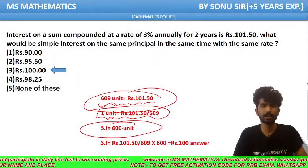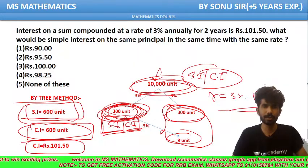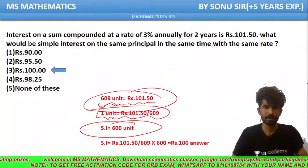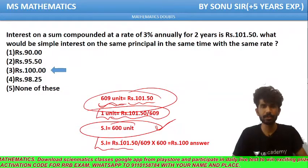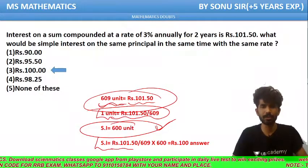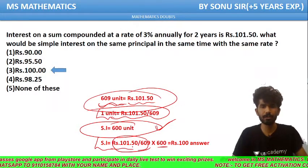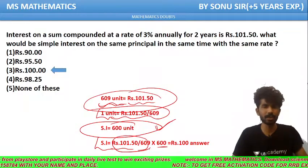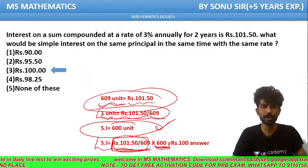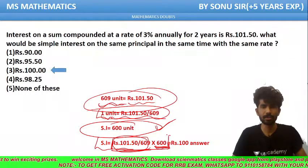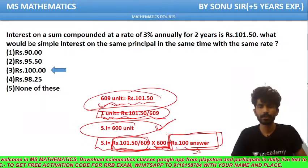So, simple interest. We calculated simple interest as 600 units on the sum of 10,000 units. Now we have to calculate in rupees: simple interest equals Rs. 101.50 divided by 609, multiplied by 600 units. Because Rs. 101.50 divided by 609 is the value for 1 unit, and there are 600 units overall. Multiplying gives us a result of Rs. 100.